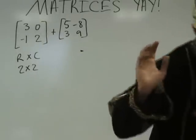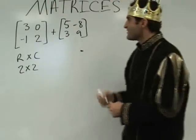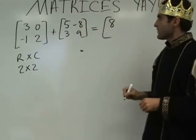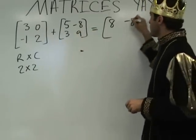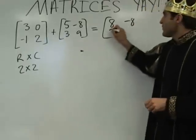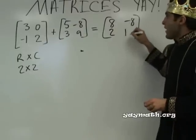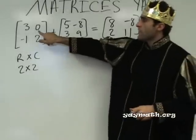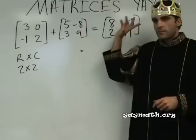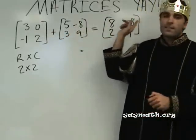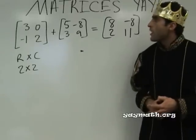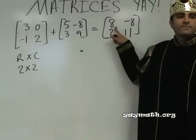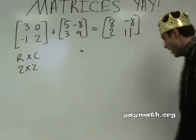Okay, let's add them up. Three plus five is eight — goes here. Zero plus negative eight is negative eight. Negative one plus three is two — bottom left. Two plus nine is eleven. So that's the answer. If you subtract, the same rule applies — for example, zero minus negative eight would be positive eight. You always add top-left with top-left, top-right with top-right.